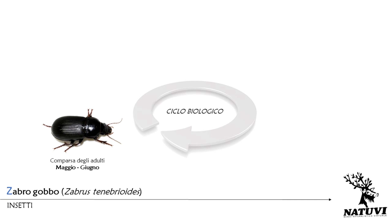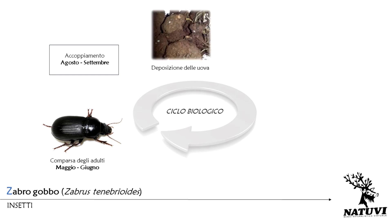Nella seconda fase del loro sviluppo divengono attivi anche di giorno, compiendo lunghi spostamenti in volo. In agosto-settembre, al raggiungimento della maturità sessuale, si accoppiano, a seguito del quale gli esemplari femmina si interrano per deporre circa una sessantina di uova.